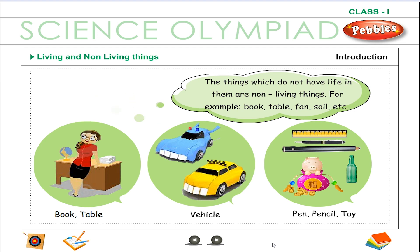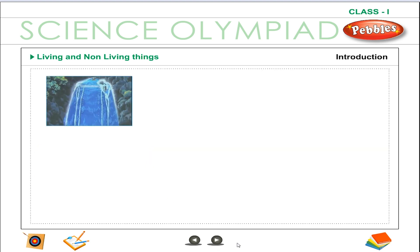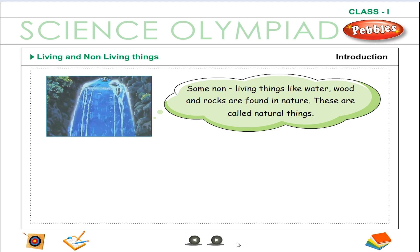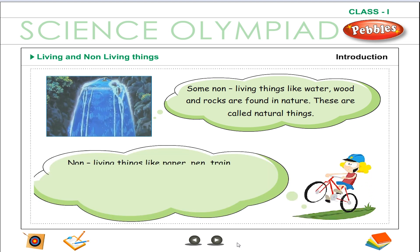Some non-living things like water, wood and rocks are found in nature. These are called natural things.